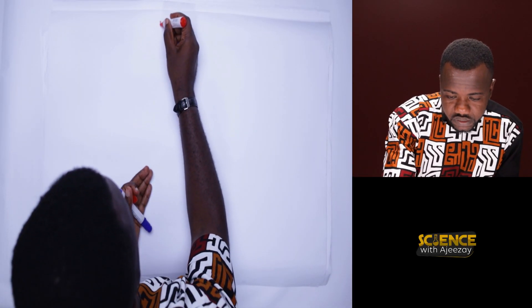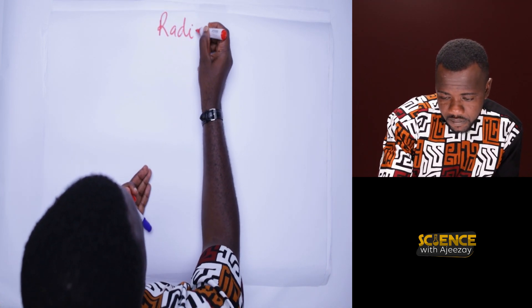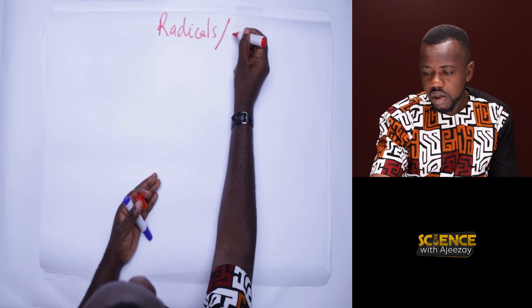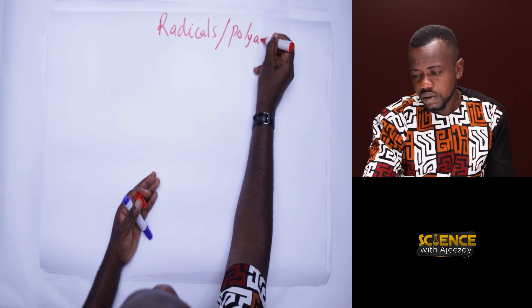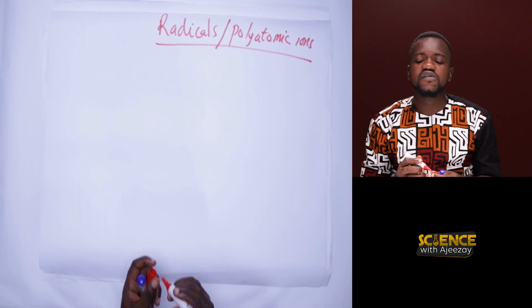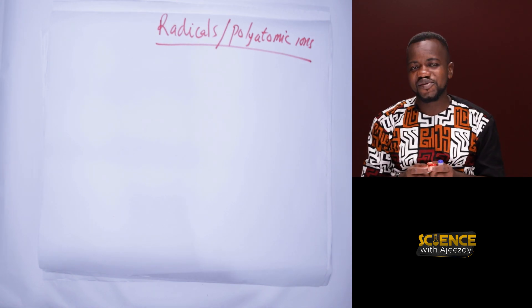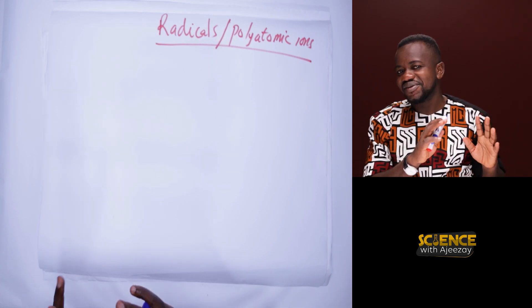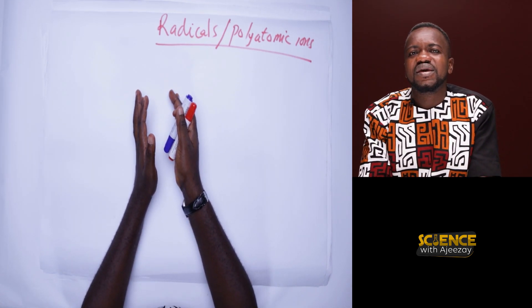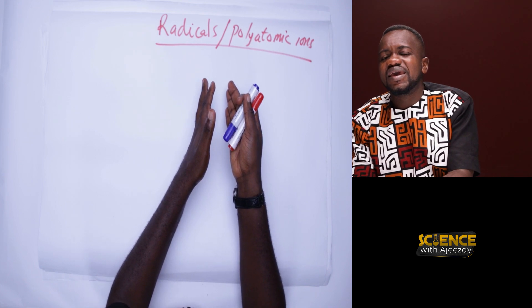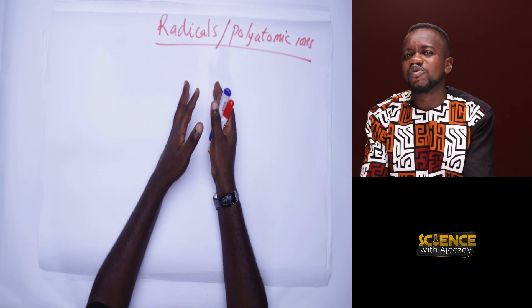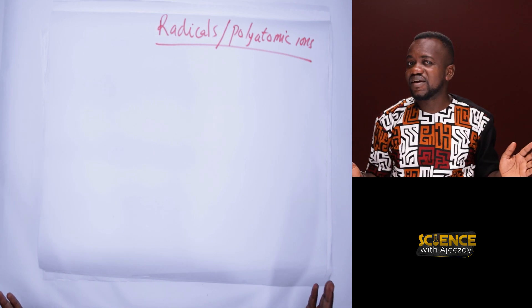Let's look at radicals. Radicals are also known as polyatomic ions. Radicals are a group of atoms with a single charge.